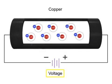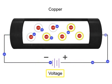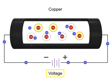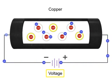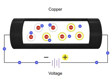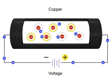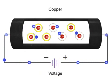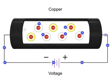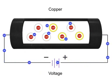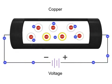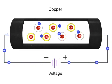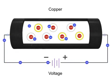When a voltage is introduced to the copper wire, the electrons can be directed through the wire, with the electrons moving towards the positive end of the source voltage. This movement or flow of electrons in one direction is called electron current flow, or just current.